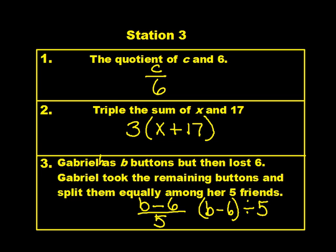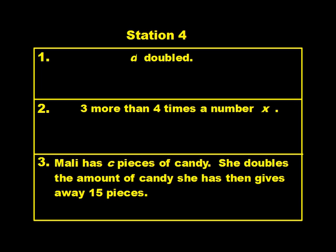On to station four. First letter is d here, apologize about that. d doubled. Number two, three more than four times a number x. Number three, Molly has c pieces of candy. She doubles the amount of candy she has, then gives away 15 pieces.